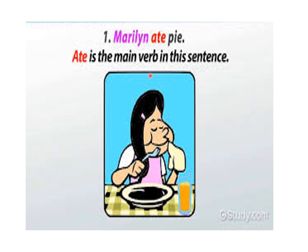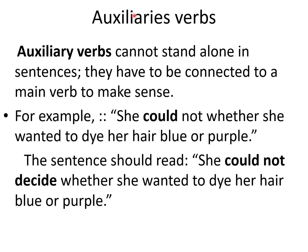In this picture, the main verb is 'ate' because this shows the actual concept — that is the main verb. Now, coming to auxiliary verbs: auxiliary verbs cannot stand alone in a sentence. They have to be connected to a main verb to make sense. Auxiliary verbs do not stand alone and they don't complete the meaning by themselves.